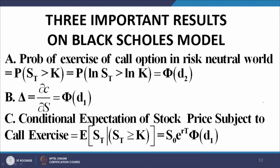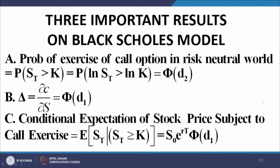The three results are: First, the probability of exercise of the call option in the risk-neutral world is given by Φ(D2). Since the logarithm is a monotonic function, probability(S_T > K) equals probability(log S_T > log K), which works out to Φ(D2), where Φ denotes the cumulative normal distribution. Second, the delta value — recall we constructed a delta-neutral riskless portfolio of one derivative and delta units of the underlying asset — when worked out using the Black-Scholes solution, delta equals Φ(D1).